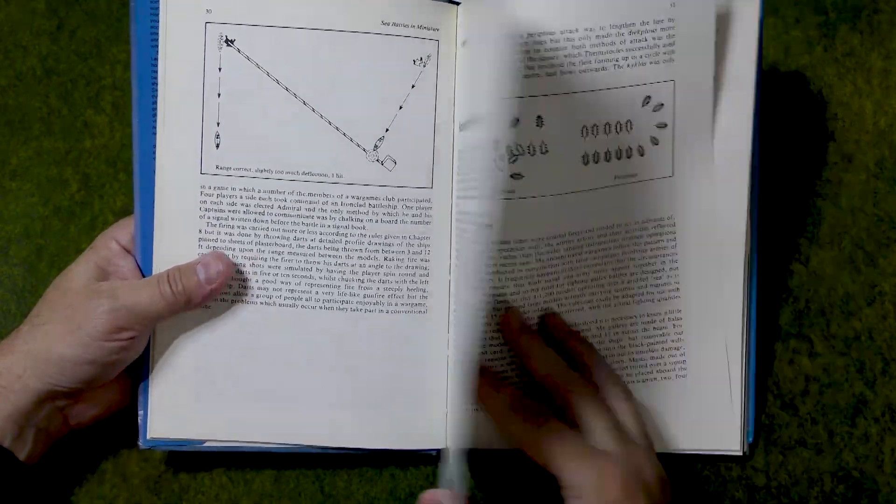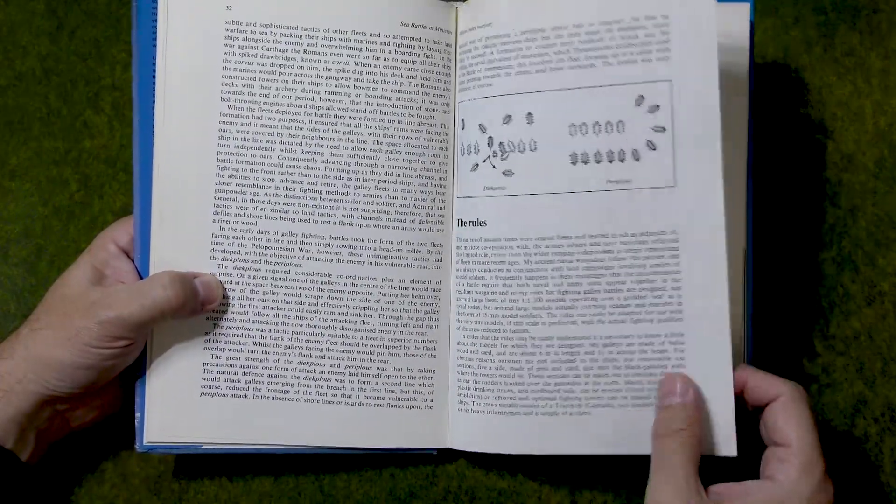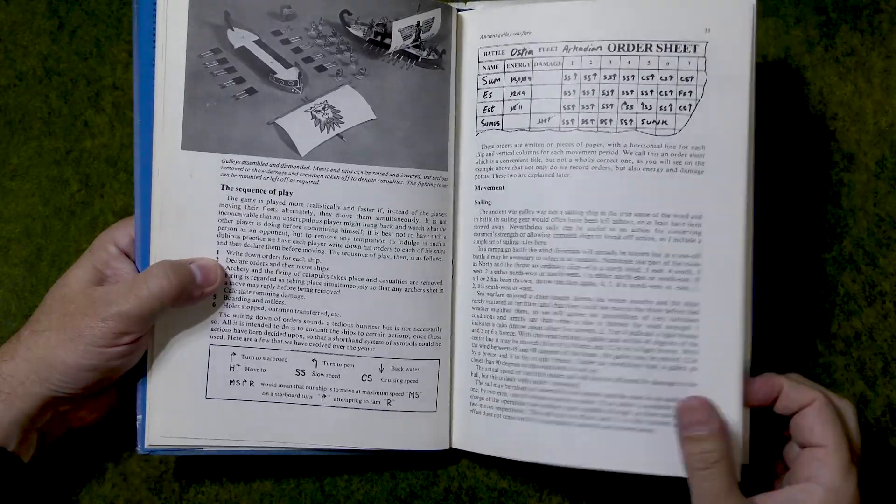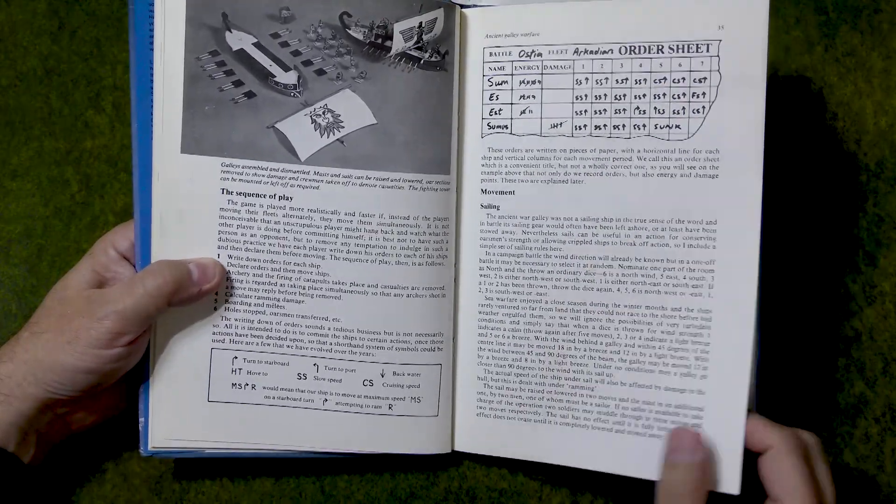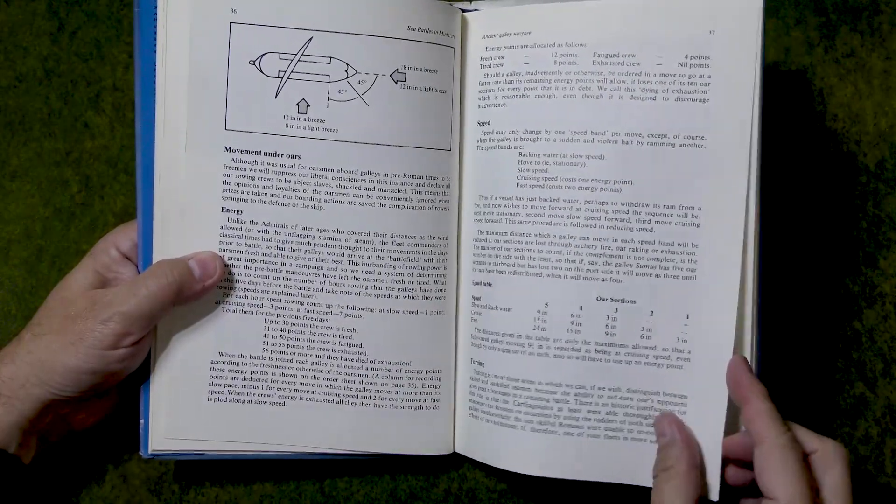So, you know, this book talks about the history. It has the rules. It shows the models. It talks a little bit about how to build them. But very fun, fun rules.